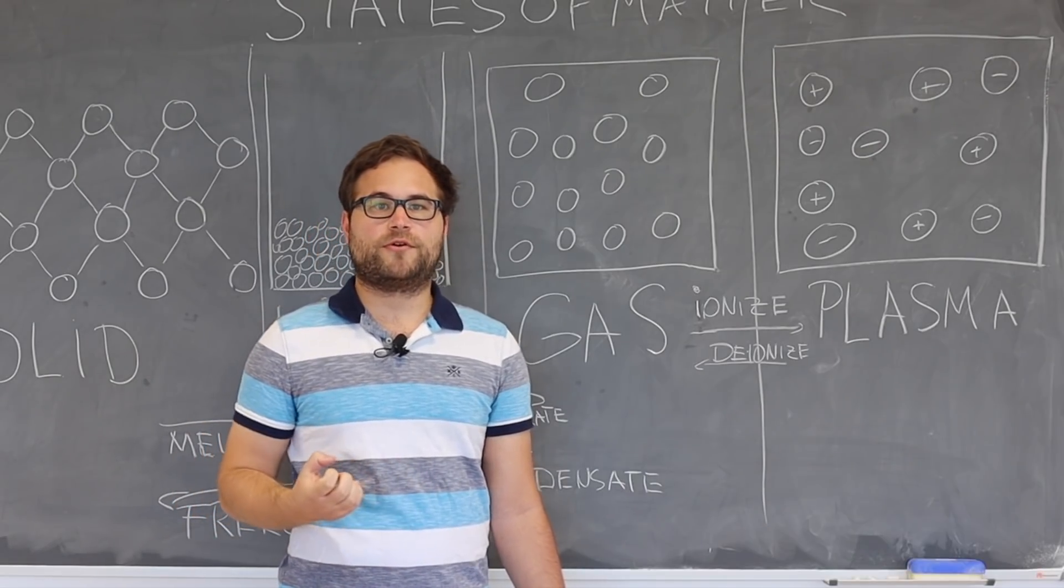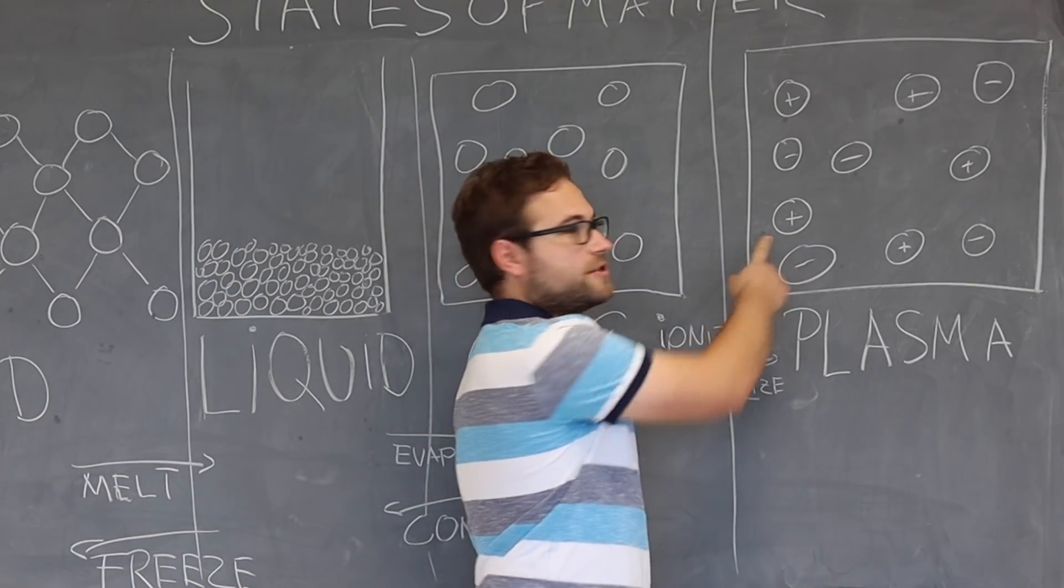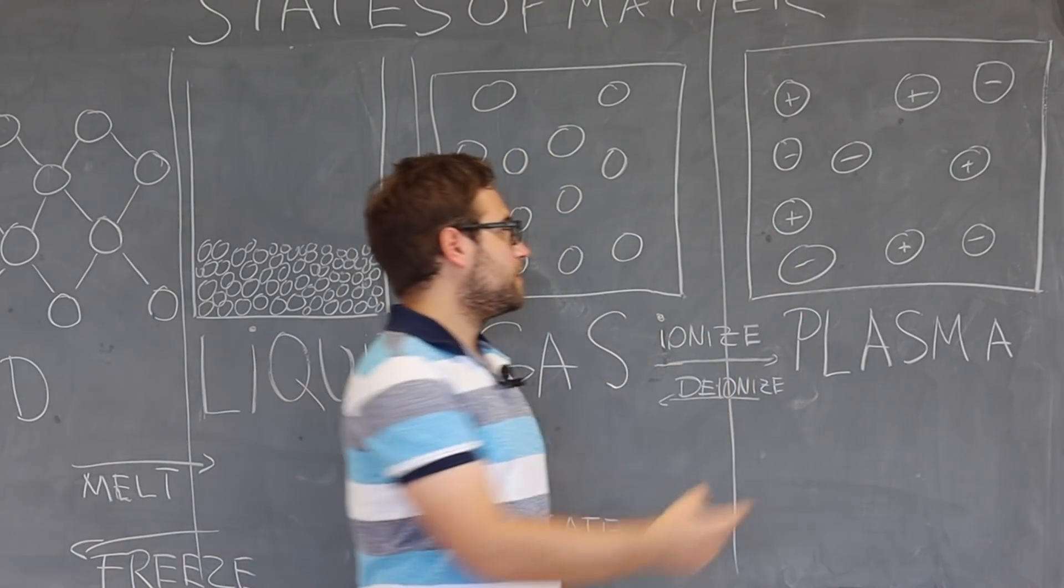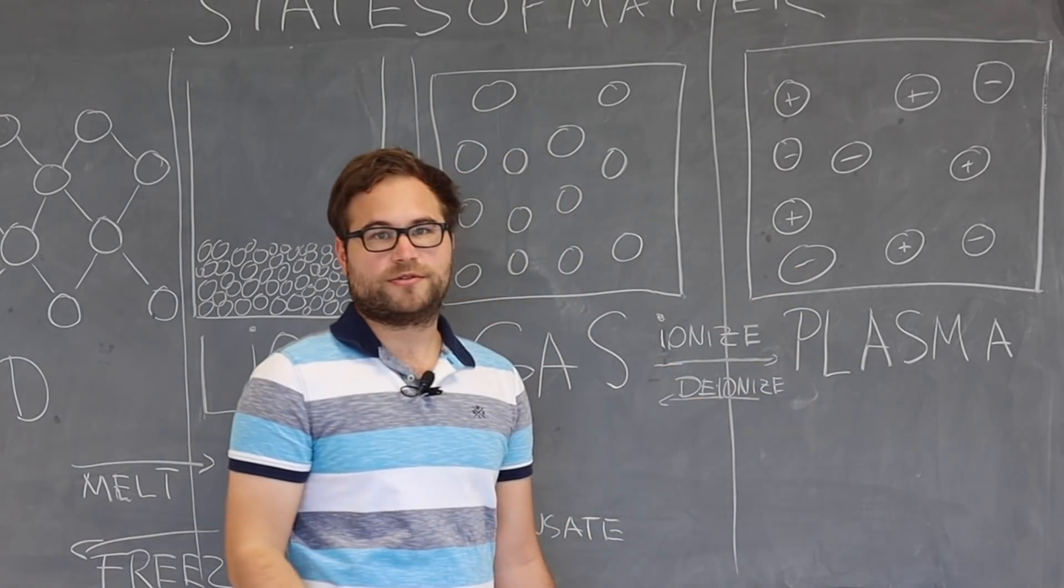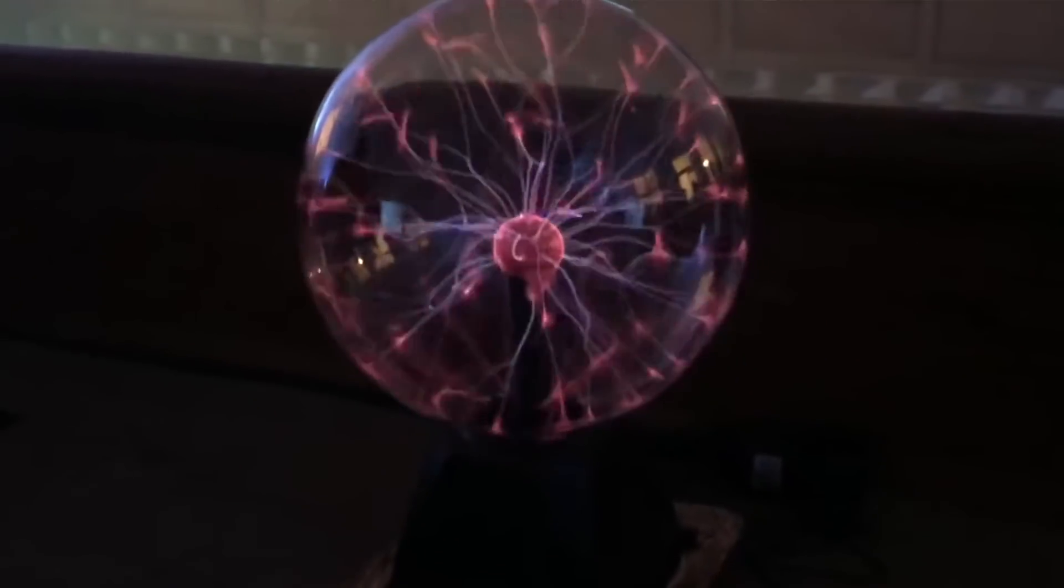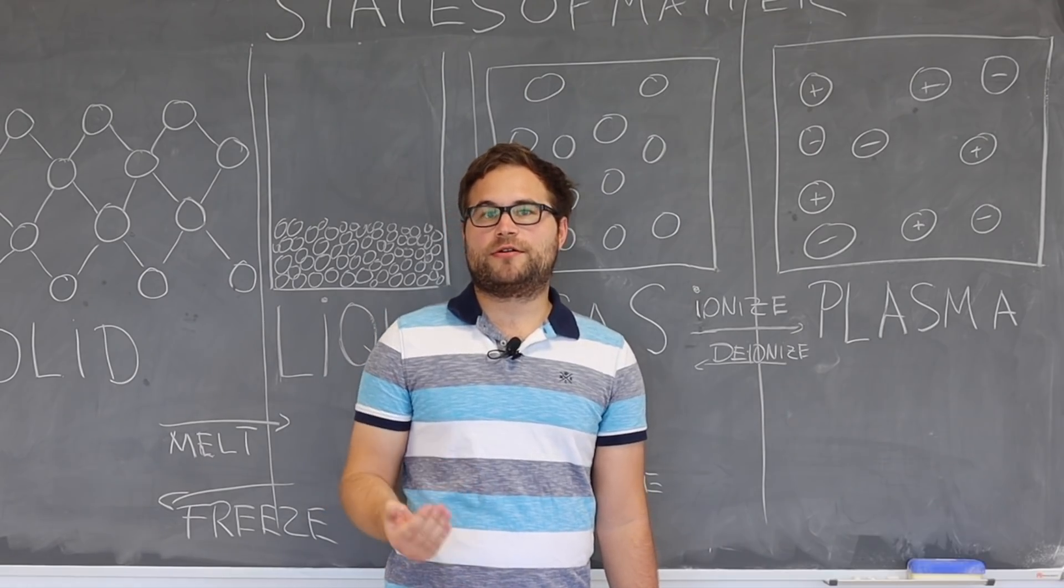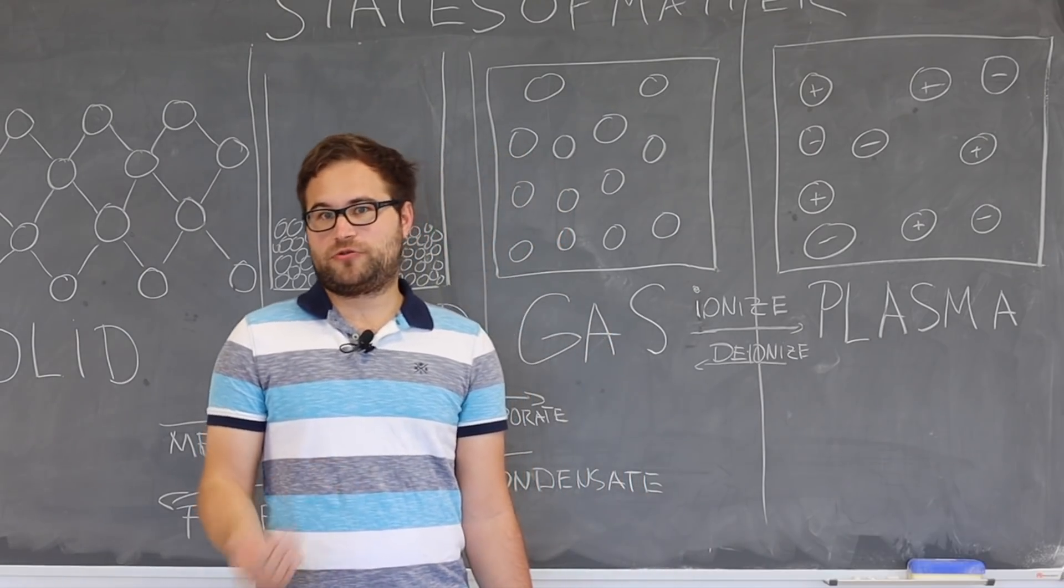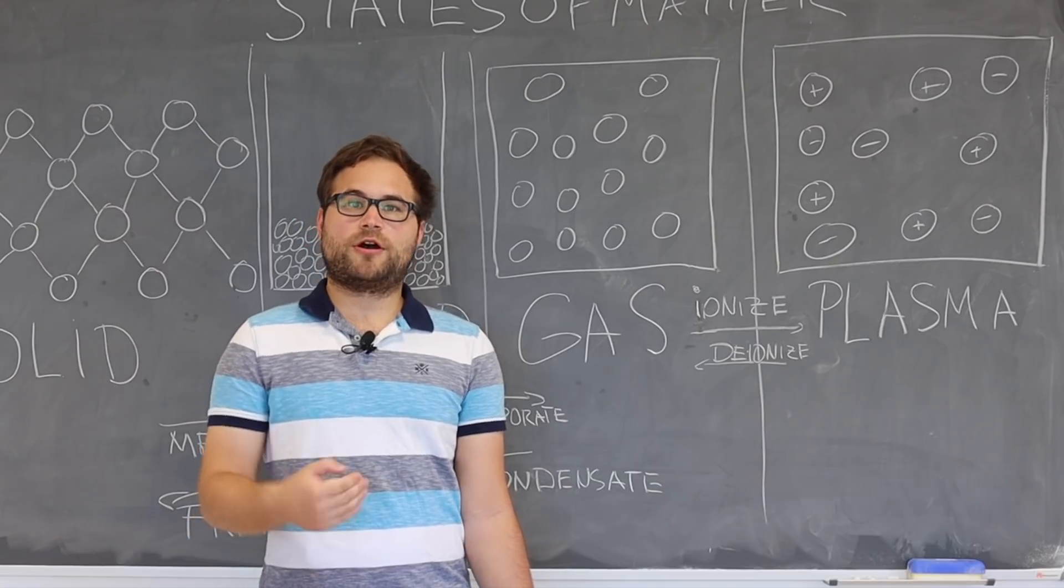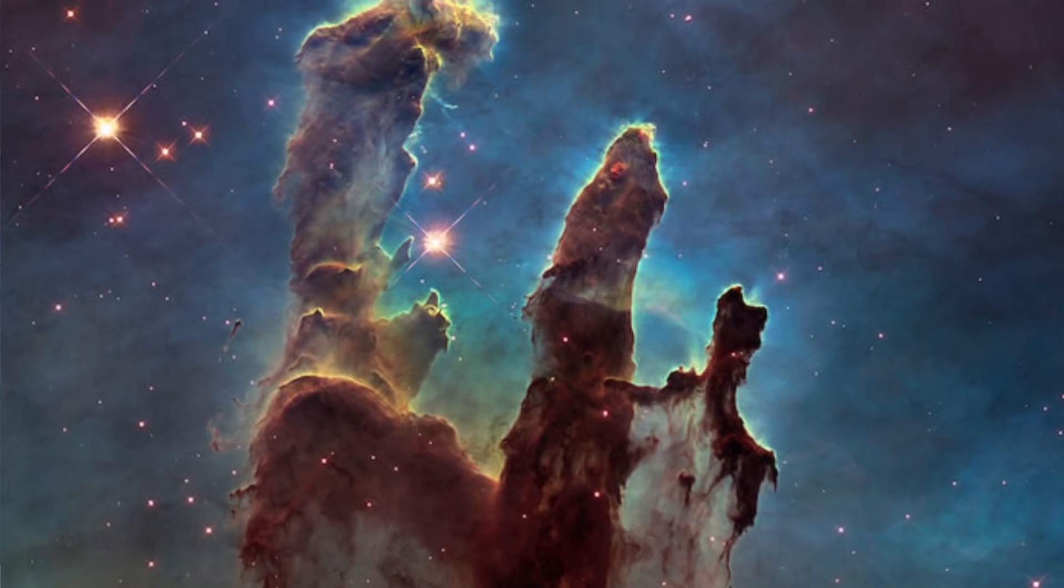In the plasma you have freely moving positively charged ions and negatively charged electrons. Unlike gases, plasmas are electrically conductive and produce magnetic fields. Even though the plasma is a rather uncommon state that's naturally appearing on Earth, it's the most common state in the visible universe.